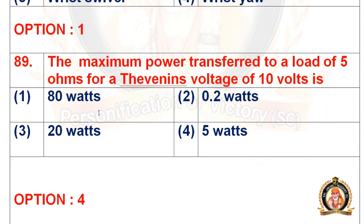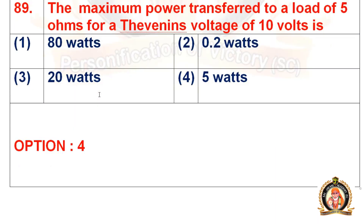Move on to the 89th question: the maximum power transferred to the load of 5 ohms for the Thevenin voltage of 10 volts. The options are 80 watts, 0.2 watts, 20 watts, and 5 watts. The right option is the fourth option — 5 watts. The maximum power transferred to a 5-ohm load for a Thevenin voltage of 10 volts is 5 watts.